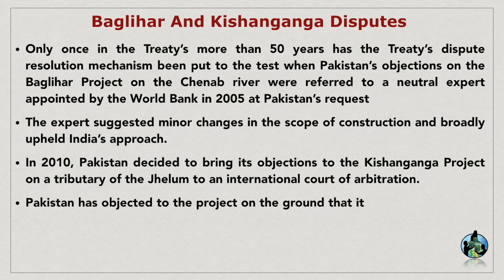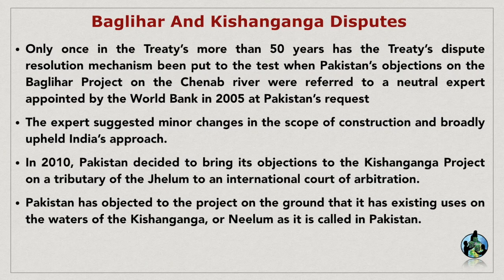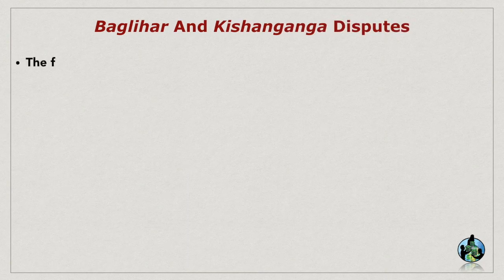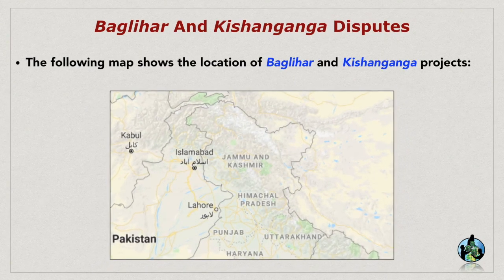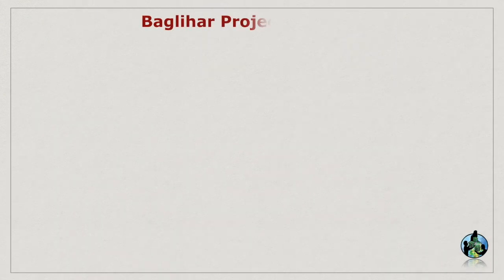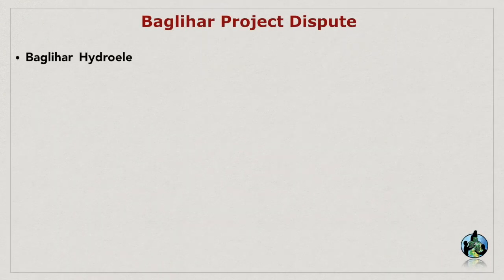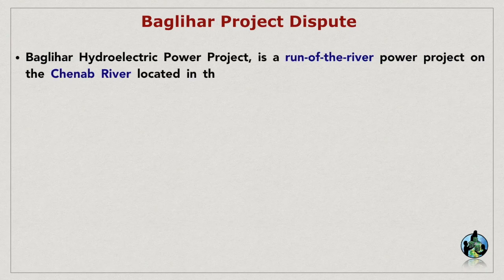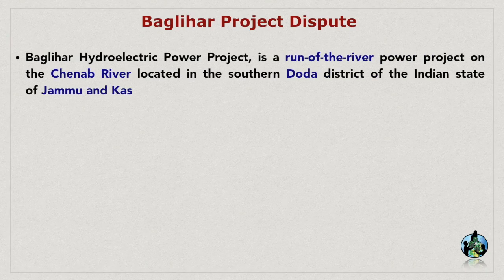Pakistan has objected to the project on the ground that it has existing uses on the waters of the Kishan Ganga, or Neelam as it is called in Pakistan. The following map shows the location of Baglihar and Kishan Ganga projects. The Baglihar hydroelectric power project is a run-of-the-river power project on the Chenab river, located in the southern Doda district of the Indian state of Jammu and Kashmir.